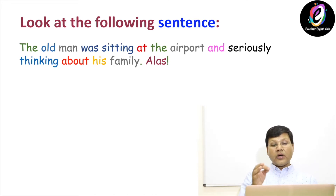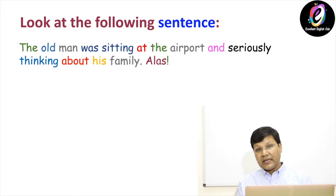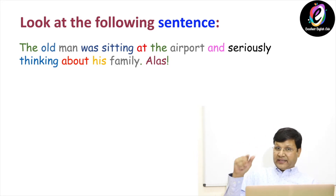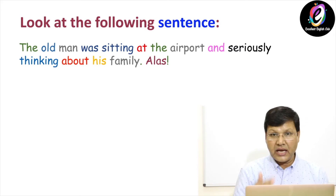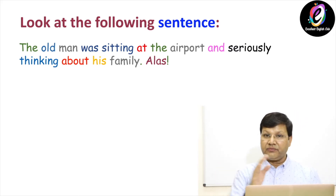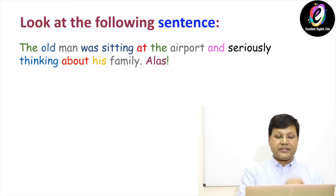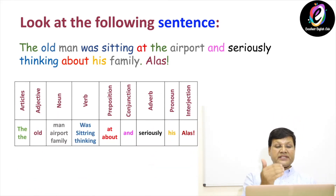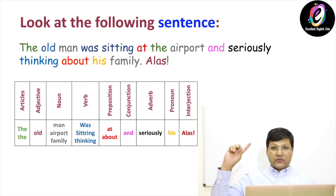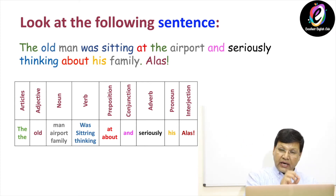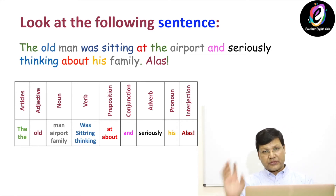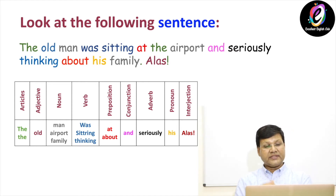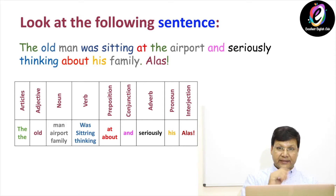Now look at the following sentence: 'The old man was sitting at the airport and seriously thinking about his family. Alas.' You will see that I have intentionally put different colors for different words — because I will identify parts of speech with the help of colors. Look at this table where I have divided all these words according to their grammatical function, or you can say according to parts of speech.